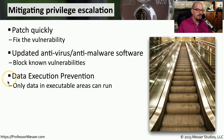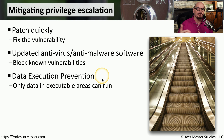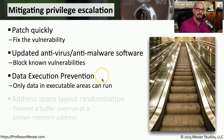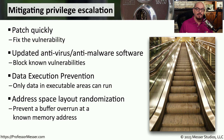Some operating systems are equipped with data execution prevention, which limits what areas of memory a particular executable can run. This might also be able to block certain exploits because those exploits are not running in an area of memory specifically allocated for the application. Along those same lines, many operating systems can randomize where data may be stored within memory when the application is running. This means that each time the application runs, data may be located in a different location, which makes it more difficult for an attacker to find a vulnerability.